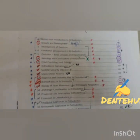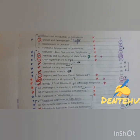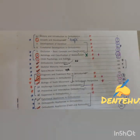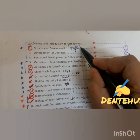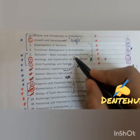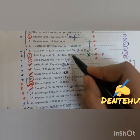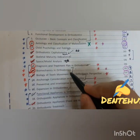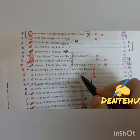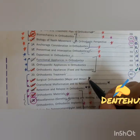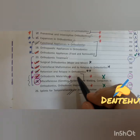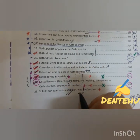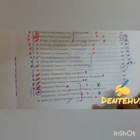So I have told you the important topics — just go through these and you will be done with ortho. The very, very important ones are: growth and development, etiology and classification, space and model analysis, surgical orthodontics, craniofacial malformation, and retention and relapse. And the orthodontic materials section is important from a dental materials point of view.